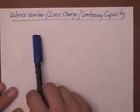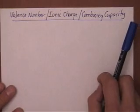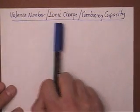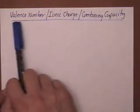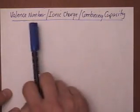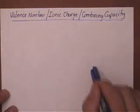We're going to look at something that's got three different names that mean pretty much the exact same thing: valence number, ionic charge, combining capacity. They all refer to the amount of electrons an atom is going to have to gain or lose to become stable.